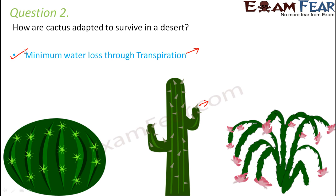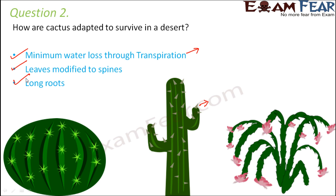Water loss is minimum because in a desert there is a lack of water. The leaves are modified to spines, which not only help in reducing water loss but also provide protection against animals. Cactus also has long roots so that they can go deep into the soil in search of water, because in a desert the water table — the level of water underground — is also very low. So long roots allow them to reach that water deep in the soil.